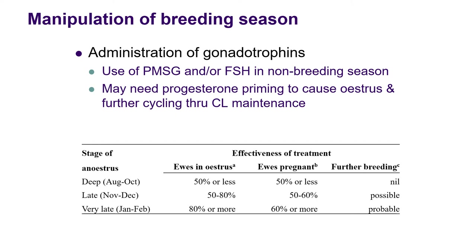The effectiveness of this treatment is mixed depending on what stage of anestrus you apply it. If you're deep in anestrus — so really not long after estrus activity has ceased — you will get around 50% or even less of the ewes responding and coming into estrus. If you do it a bit later, it's up to 50–80%, and if you do it very close to the actual breeding season itself, then you're going to get even more of the ewes coming into estrus. So this shows that the closer you get to the normal breeding season, the greater the effectiveness of this particular technique.